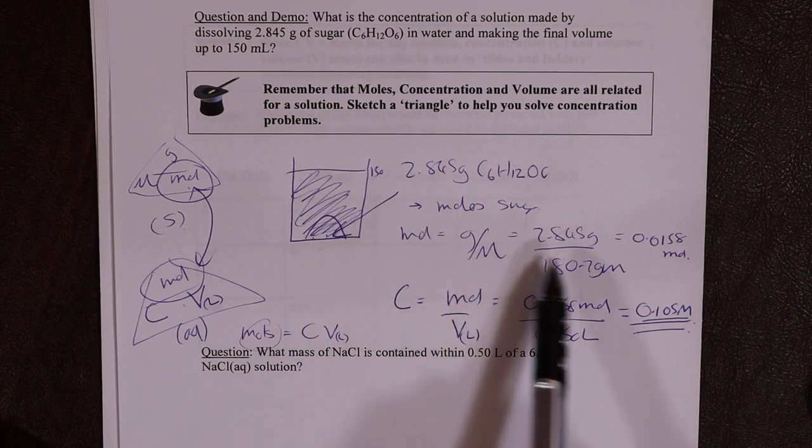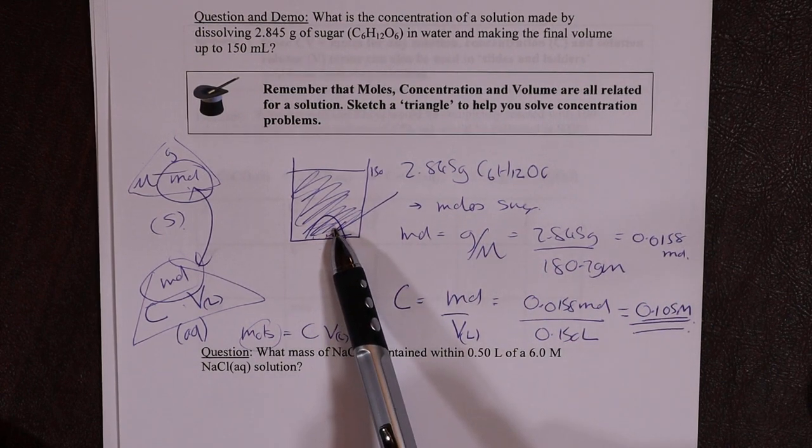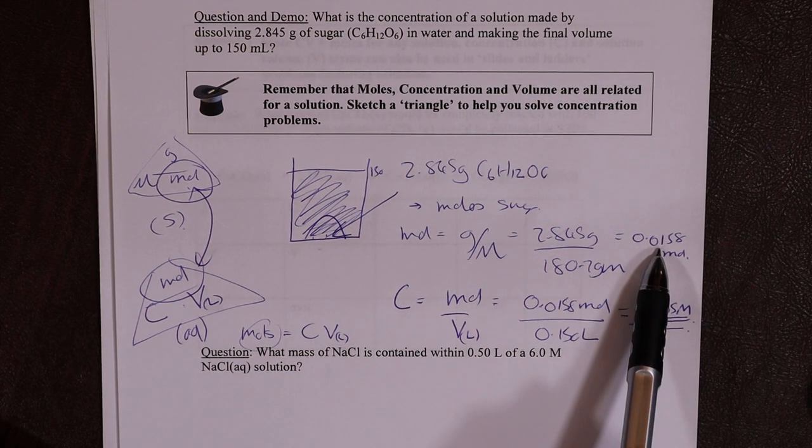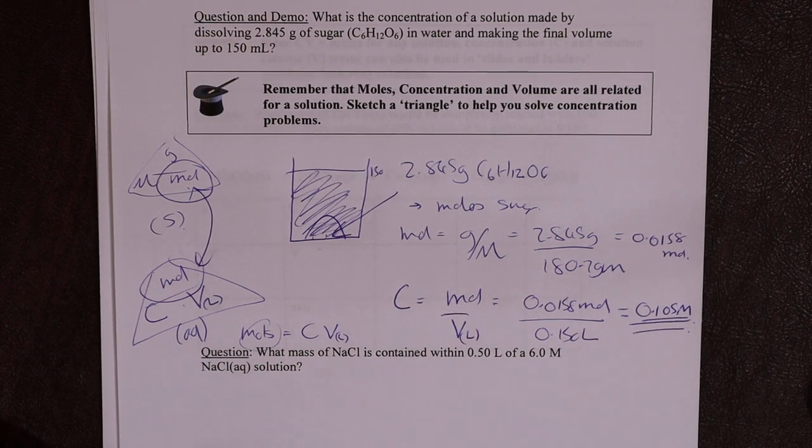So we use this first one to work out the moles of sugar in the pile, just using grams, molecular weight, and moles. Then, once it's dissolved and we have the volume it's swimming around in and the same number of consistent moles, we can work out the strength or the concentration.